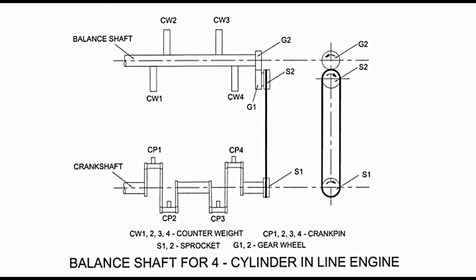The balance shaft is yet another component that can be added to the engine assembly to reduce crankshaft vibrations. It is a shaft that is the mirror image of the crankshaft. Referring to the diagram, it shows the crankshaft on the lower side and the balance shaft on the upper side. Other parts of the engine have not been shown intentionally to simplify the diagram. The arrangement shown is for a 4-cylinder inline engine. Rotary motion of the crankshaft is transferred to the balance shaft with the help of a chain drive.